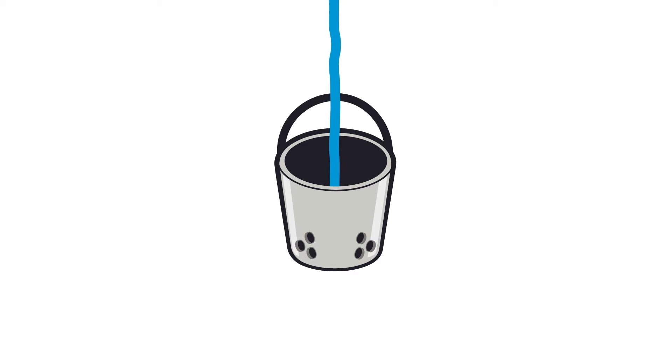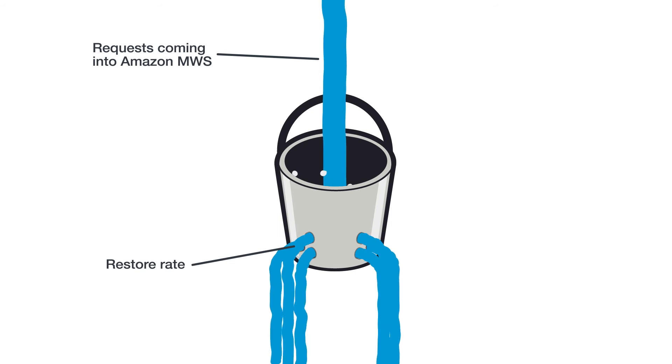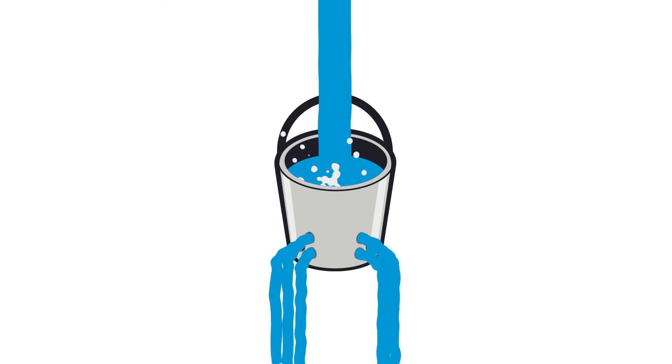MWS uses a variation of the Leaky Bucket algorithm to meter the web service and implement throttling. Let's think about what pouring water into a bucket with holes looks like. In this example, the water represents the requests coming into MWS, and the holes in the bucket represent the restore rate, which is the amount of time it takes to be able to make new requests. If too many requests are submitted at once, then the bucket overflows, and in the case of MWS, overflowing is known as throttling.